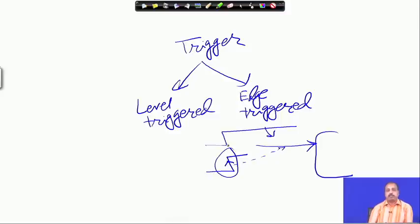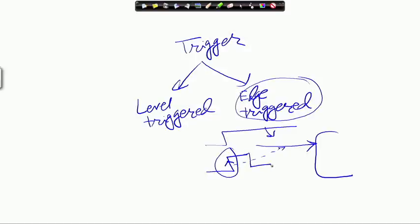RST 5.5 and 6.5 do not have any separate latch or memory, but RST 7.5 has a latch associated with it. So RST 7.5 is an edge-triggered interrupt — when the interrupt occurs, the latch is set accordingly, even if that line goes low after some time. The rising edge will be remembered by the flip-flop.